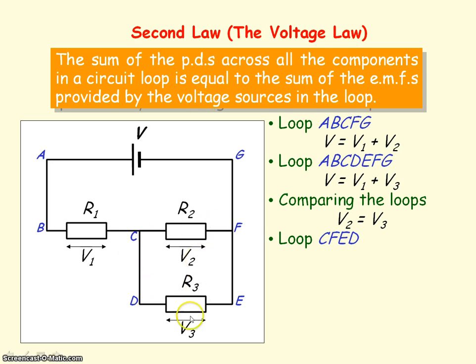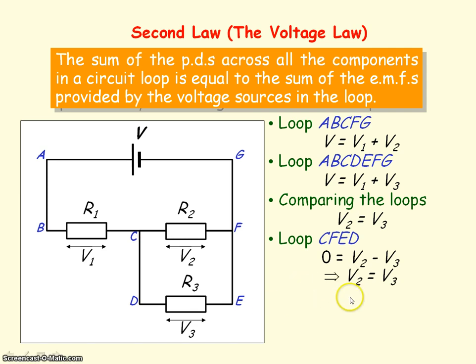There are no EMFs in that loop, so the EMF is zero. So we can say V2 minus V3 equals zero, and this is just confirming that V2 equals V3.